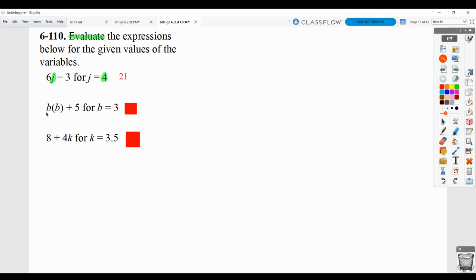Here, it would be b times the value of b. That's what we know because of the parentheses, no other operation sign in between. b times the value of b plus 5. So then that would be 3 times 3 plus 5, which is 14. Here, it would be 8 plus 4 times the value of k. And k is 3 1/2. So 8 plus 4 times 3 1/2. So make sure you have work shown to get credit.